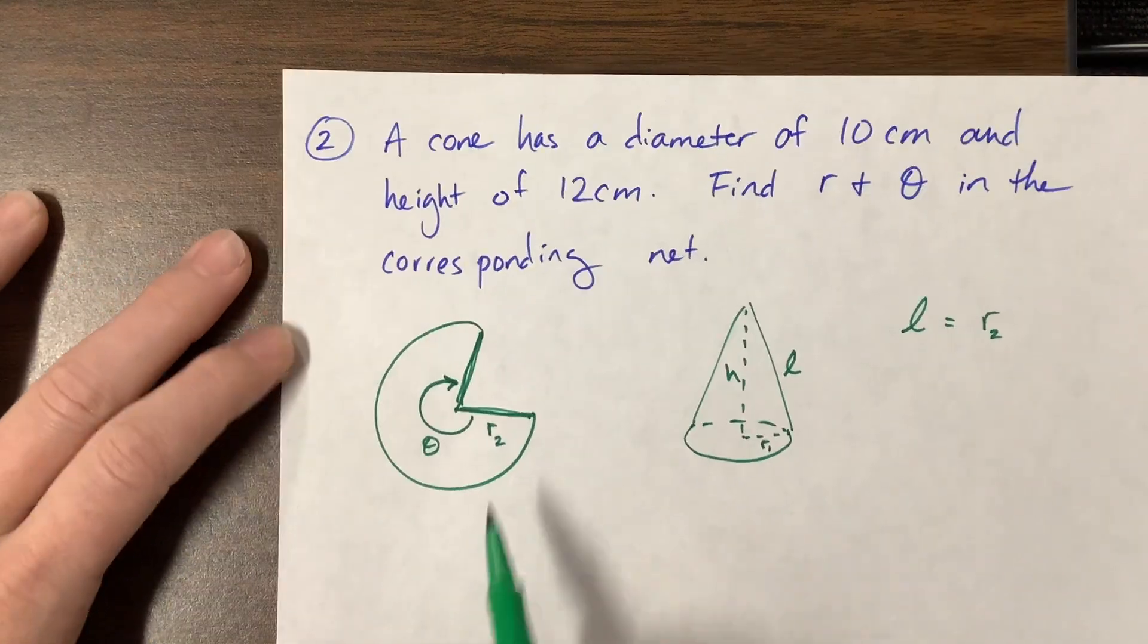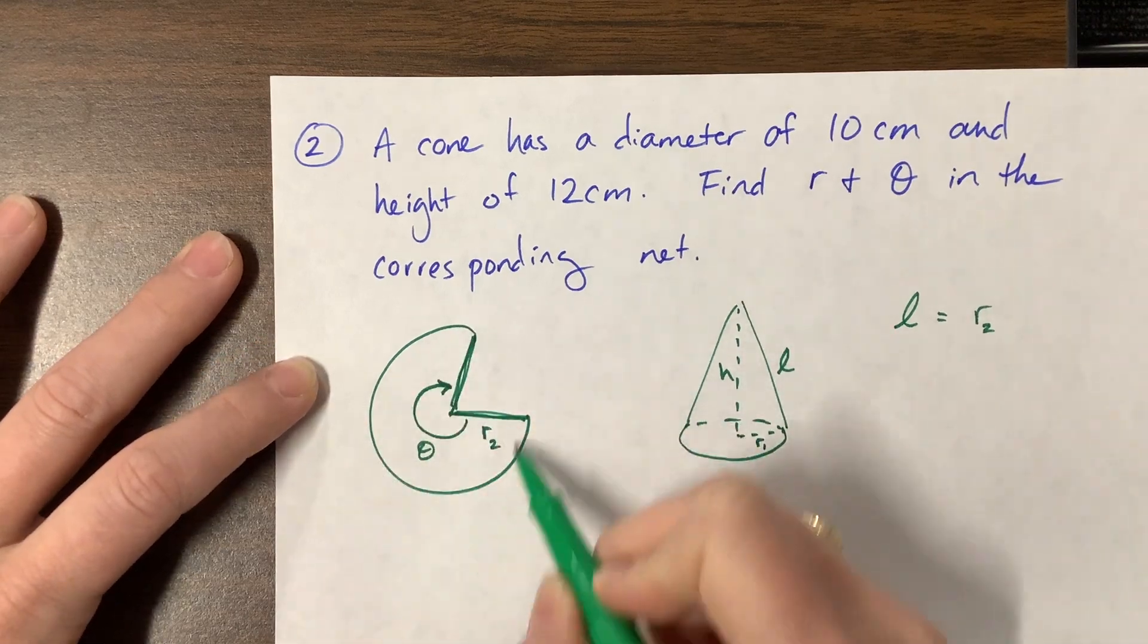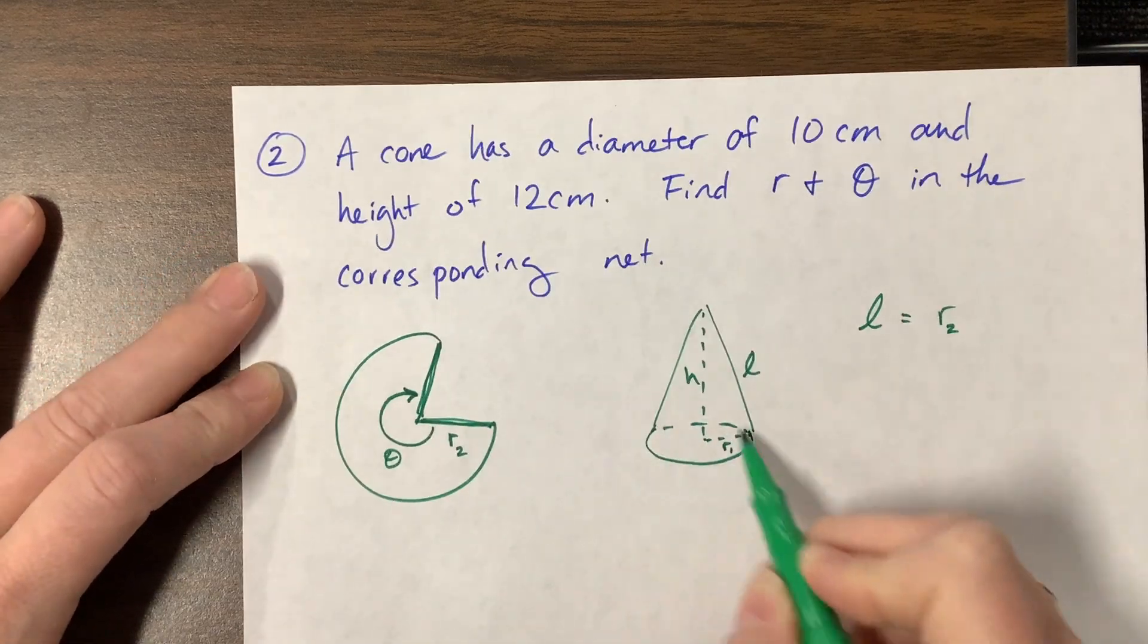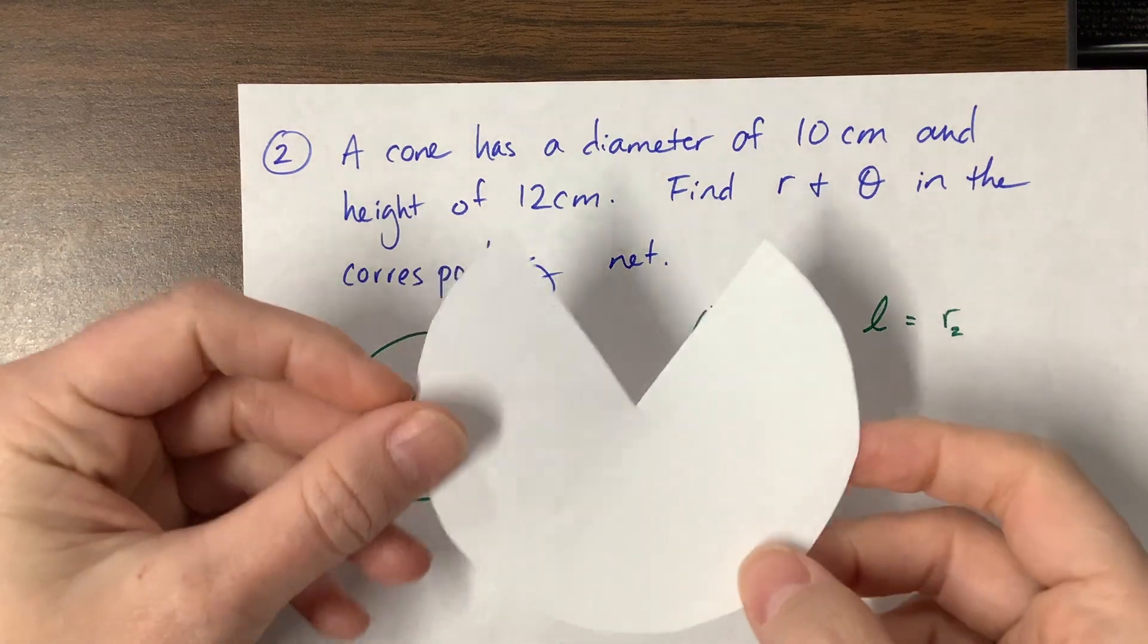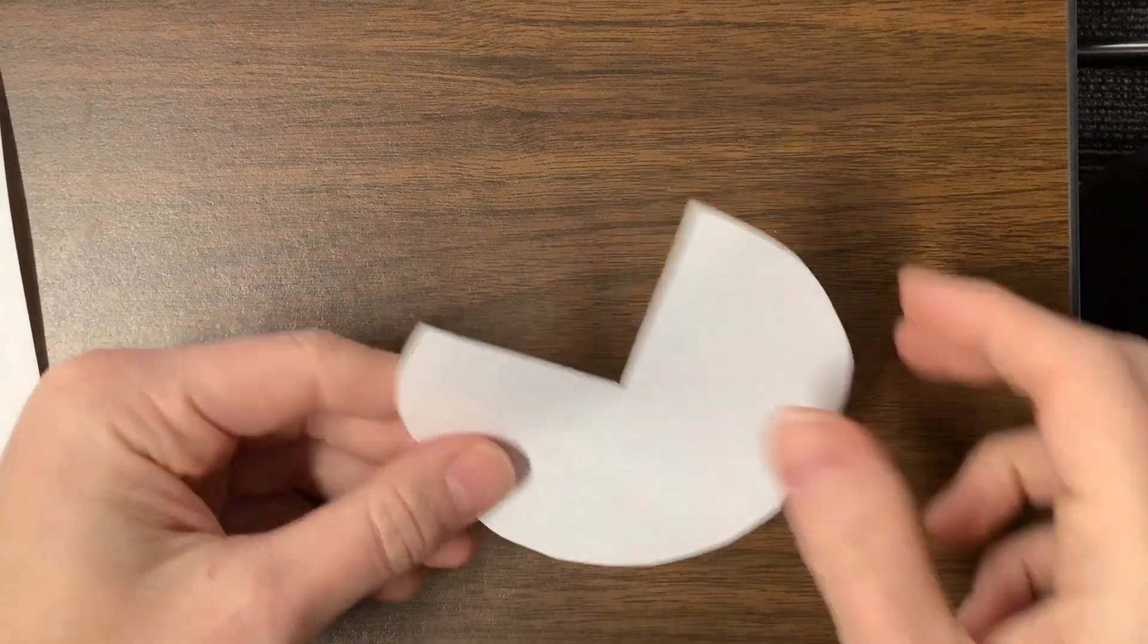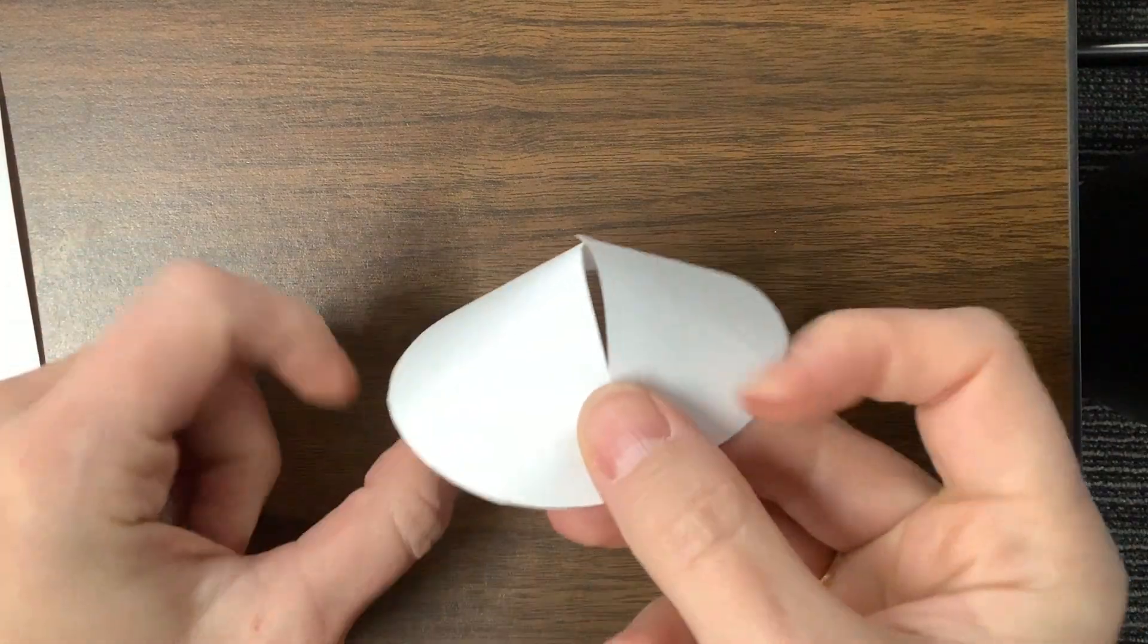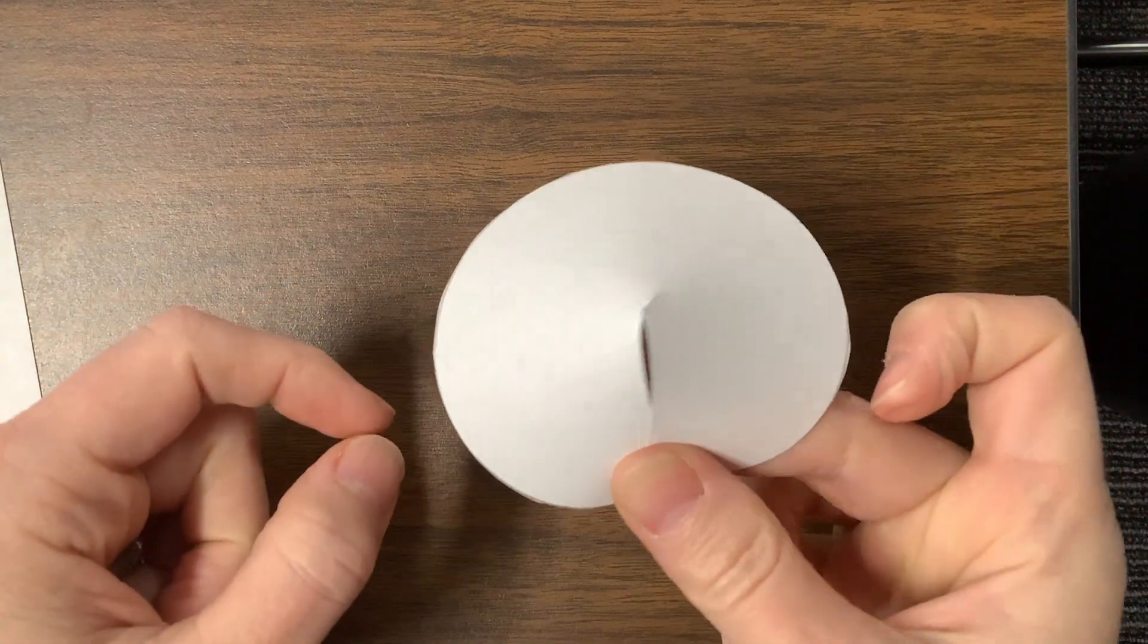So we know that the slant height of the cone is equal to the radius of the sector. And then we know that the arc length here is equal to the circumference down here. So look again with my nice little, this is the, so you can see it, this is that arc length along here. And then when I make this become a cone, then that is the circumference of the base.